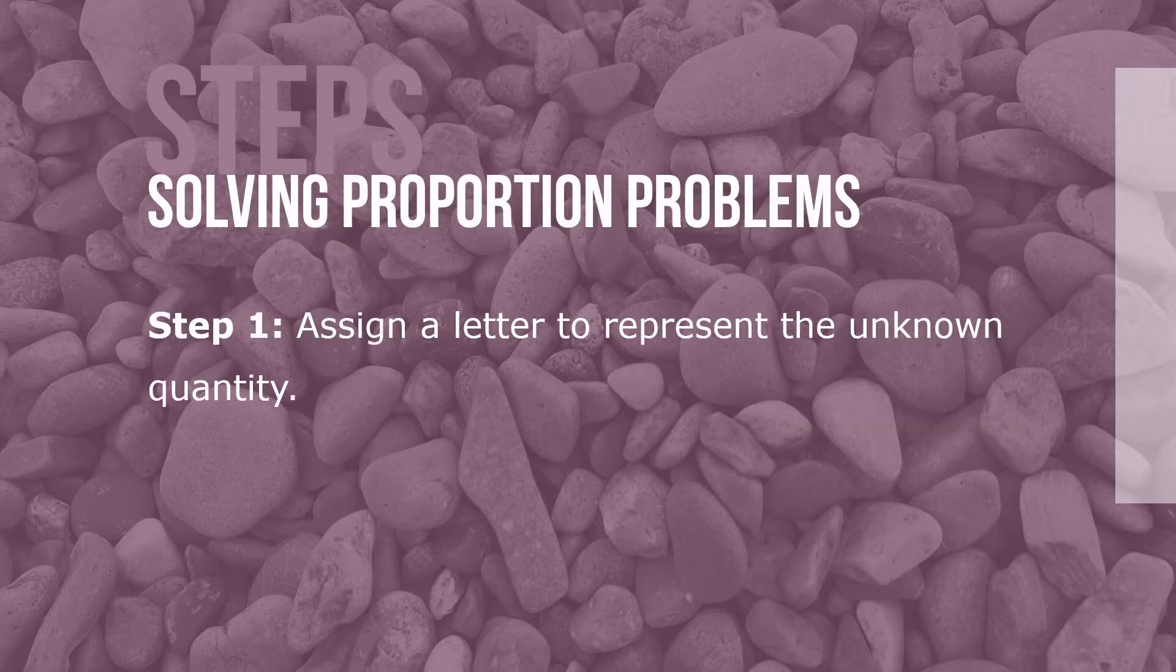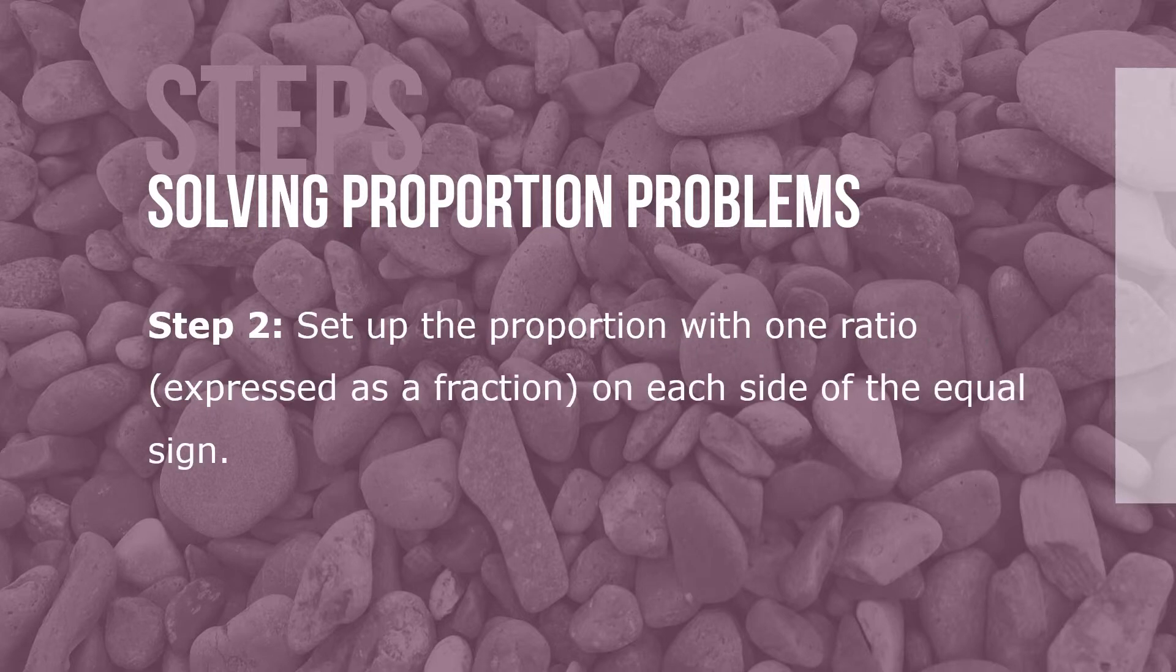Here are the steps for solving proportion problems using cross multiplication. Step 1: Assign a letter to represent the unknown quantity. Step 2: Set up the proportion with one ratio expressed as a fraction on each side of the equal sign.